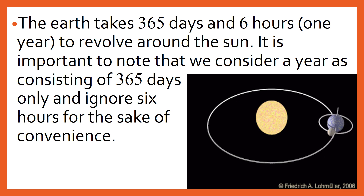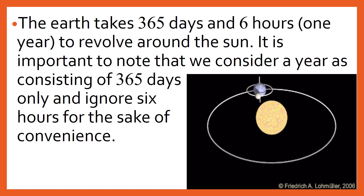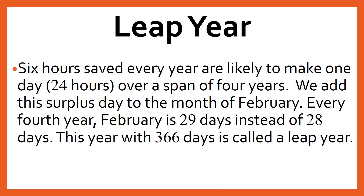So, in order to compensate, the remaining 6 hours are added to the month of February every 4 years. Six hours saved every year make 1 day over a span of 4 years. We add this surplus day to the month of February. Every 4th year, February has 29 days instead of 28 days. This year with 366 days is called a leap year.